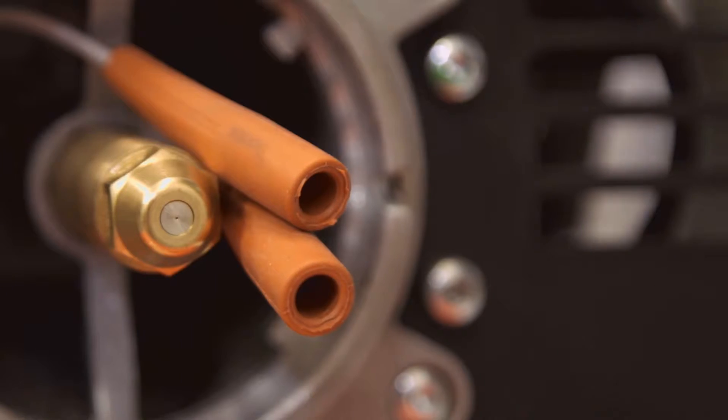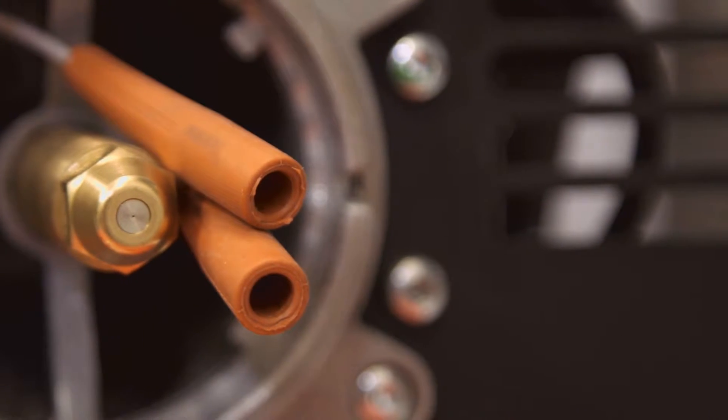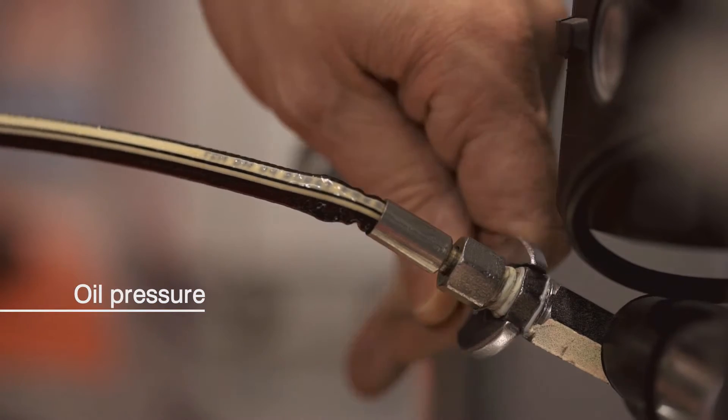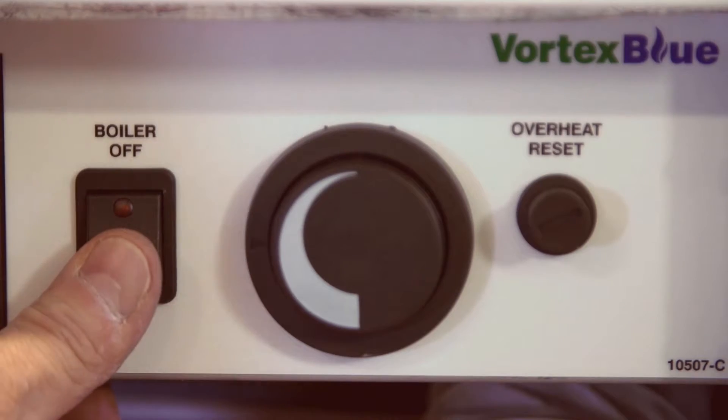Don't forget to reconnect the two ignition leads to the electrodes first. Next, connect your oil pressure gauge to the burner pump. Bleed the oil supply and then switch the boiler on.